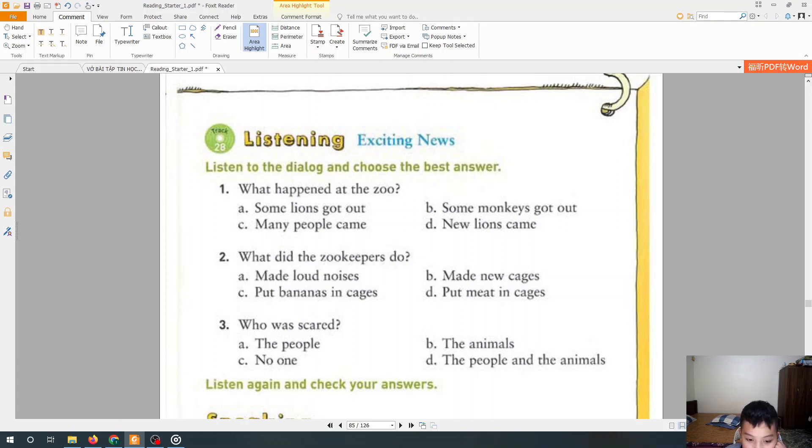Now, let's choose the best answers. What happened at the zoo? Is it answer A? Some lions got out. Next question. What did the zookeepers do? They put meat in the cage. Next question. Who was scared? This is the people.